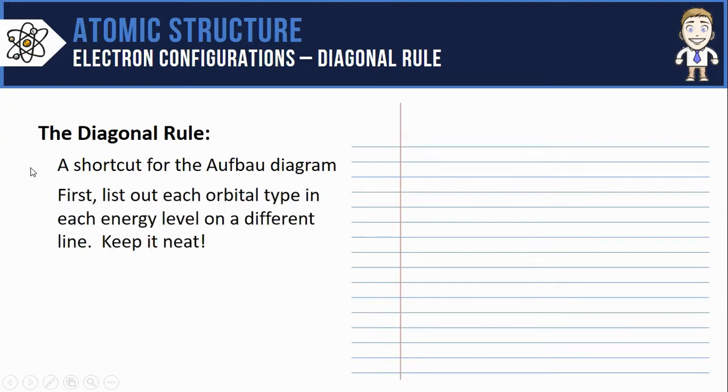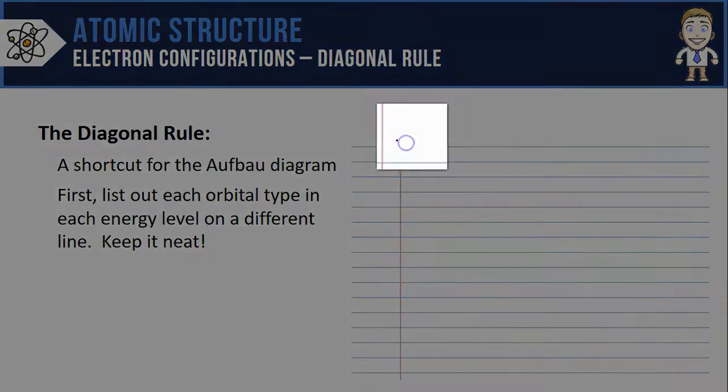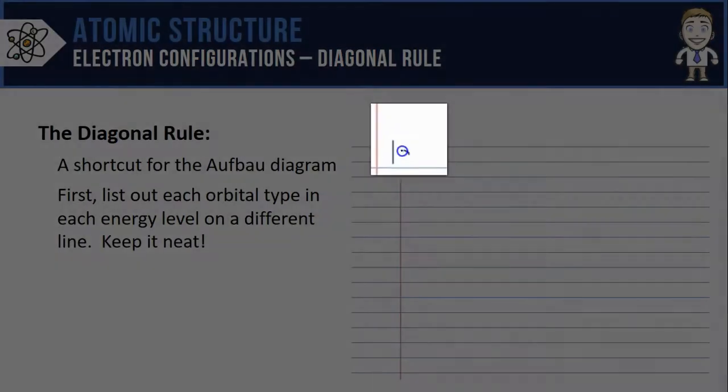First thing we're going to do to set up the diagonal rule is list out each orbital type in each energy level on a different line. Remember to keep it nice and neat—that's why we're using lined paper. At the top of the lined paper, we'll start with the first energy level and the only orbital type that it has is the 1s.